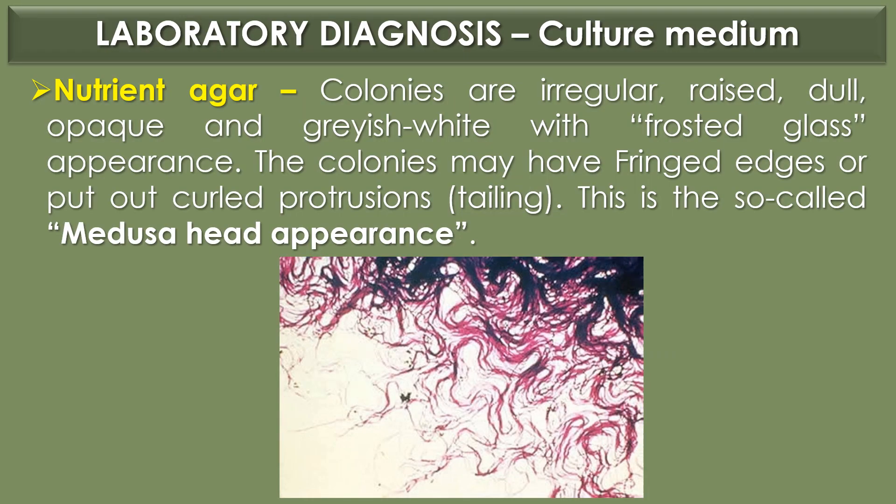Colony morphology of Bacillus anthracis. In nutrient agar, Bacillus anthracis colonies are irregular, raised, dull, opaque, and grayish-white with a frosted glass or ground glass appearance.